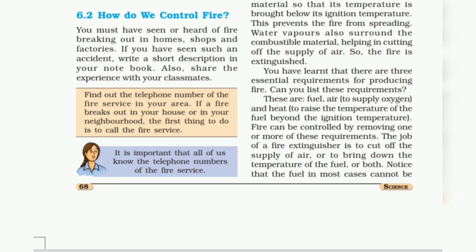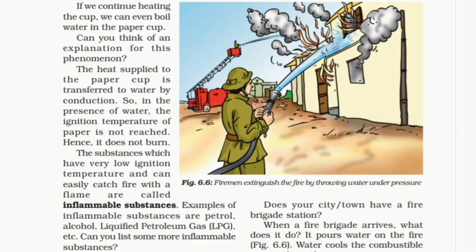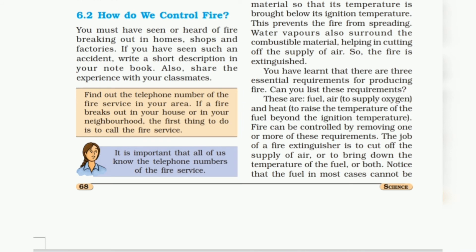Find out the telephone number of the fire service in your area. If a fire breaks out in your house or neighborhood, the first thing to do is to call the fire service. Does your city or town have a fire brigade station? When a fire brigade arrives, it pours water on the fire, as shown in figure 6.6 — a fireman extinguishing the fire by throwing water under pressure. Water cools the combustible material so that its temperature is brought below its ignition temperature, preventing the fire from spreading. Water vapors also surround the combustible material, helping to cut off the supply of air, and the fire is extinguished.